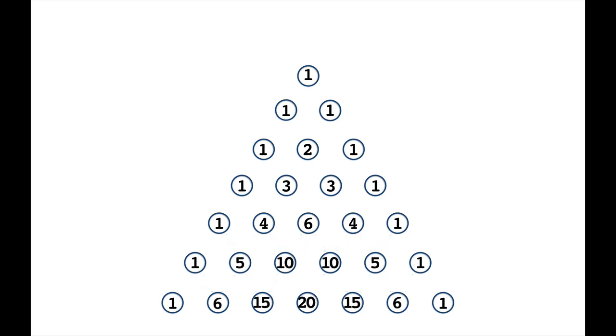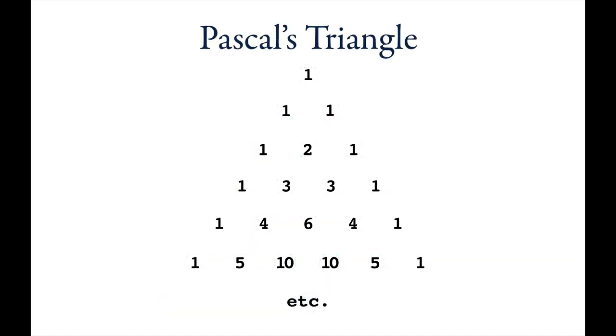And you can keep on going as many rows as you want. This configuration is known as Pascal's triangle after the French mathematician Blaise Pascal. Although he didn't invent the triangle, he studied it and his name has been attached to it. But ancient mathematicians knew about this long before Pascal.